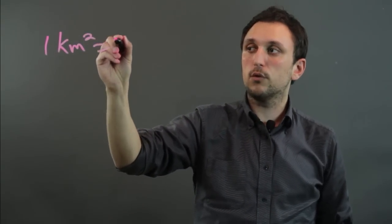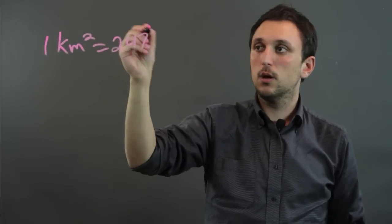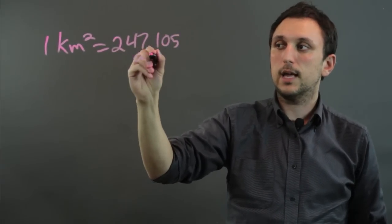So one kilometer squared equals roughly two hundred and forty-seven point one zero five acres.